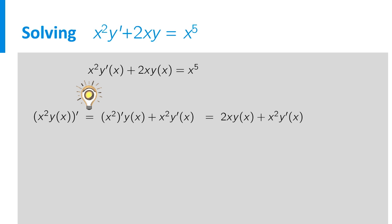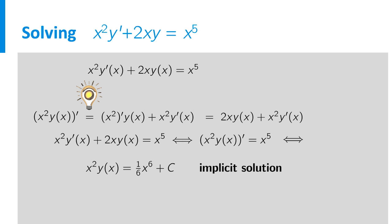So the equation can be written as the derivative of x squared times y(x) equals x to the fifth. This of course means that x squared times y(x) itself must be equal to a primitive function of x to the fifth, which equals 1 over 6 times x to the sixth plus c for some constant c.